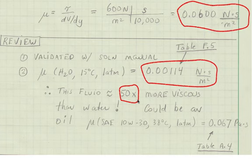Is this possible? So I looked at some other property values and I learned that the viscosity of 10w30 motor oil is 0.067 pascal seconds, which is very similar to 0.06. So this fluid could be an oil.